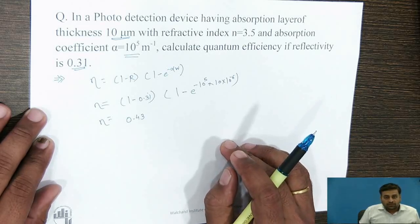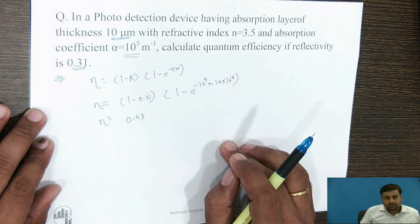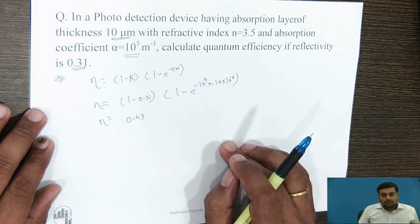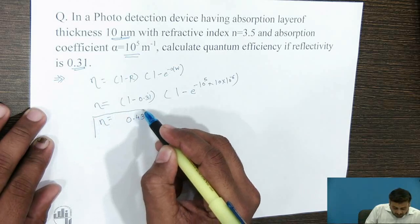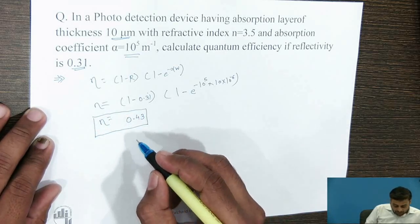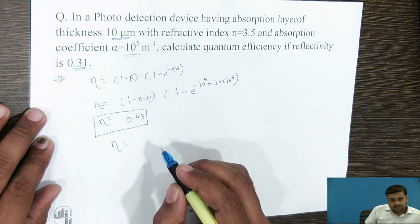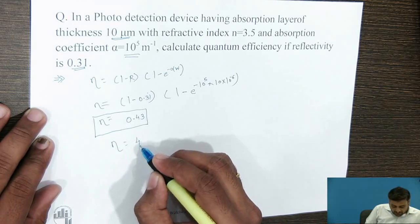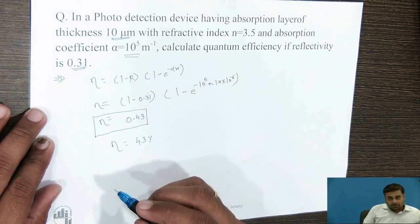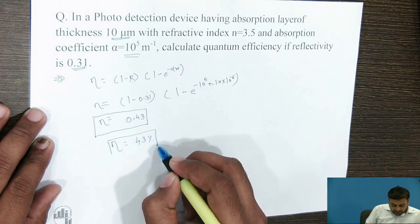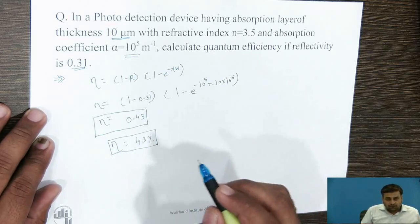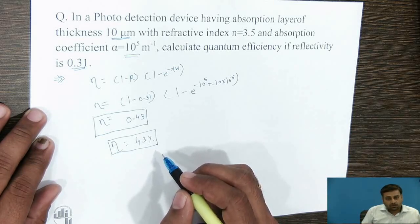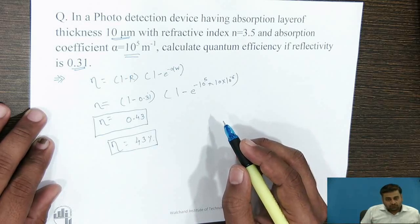For a photo detection device with an absorption coefficient of 10⁵ per meter, absorption layer thickness of 10 micrometer, and Fresnel's reflection coefficient of 0.31, we get a quantum efficiency of 0.43, or 43% in percentage terms. This means out of 100 incident photons, 43 photons are absorbed to generate electron-hole pairs, which in turn contribute to photo current generation.